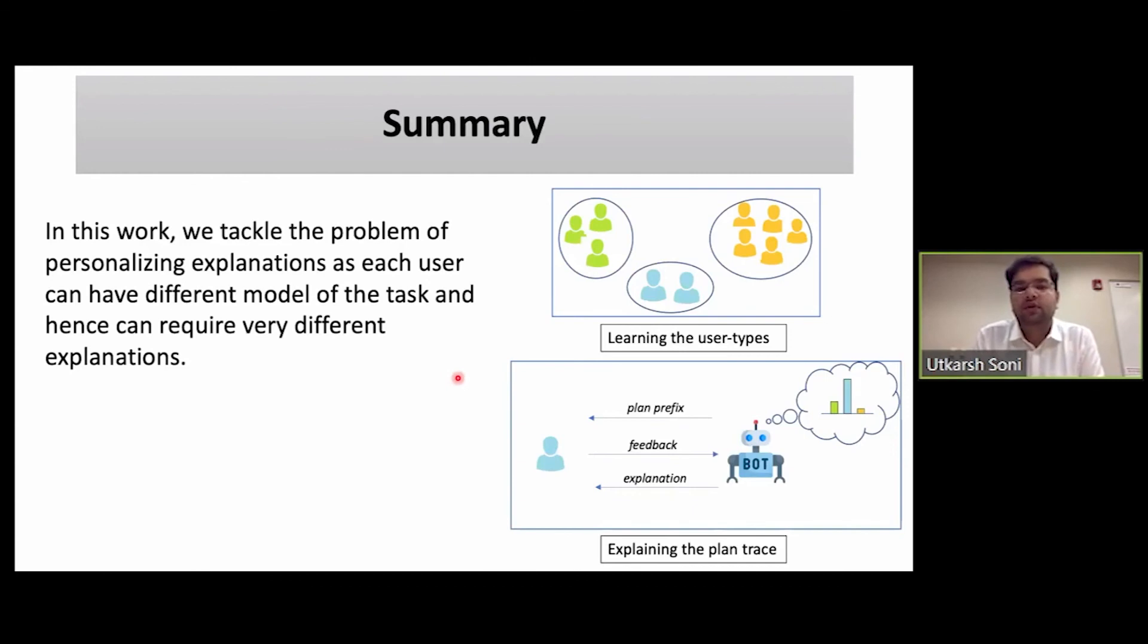In summary, in this work, we tackle the problem of personalizing explanation in sequential decision-making problems, where the hypothesis is that each user can have a different model of the task and hence can require very different explanations. We start by clustering and identifying all the user types. Then we model the actual interaction with the target user as a meta-POMDP, where the user type is a hidden variable of the state. Thank you and I can take any questions now.